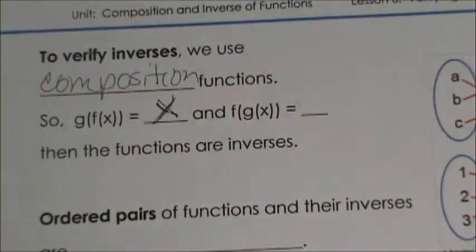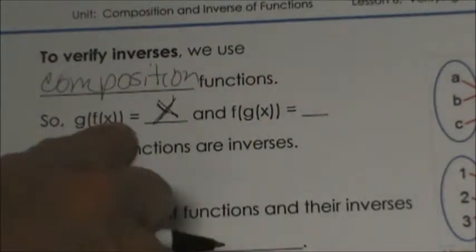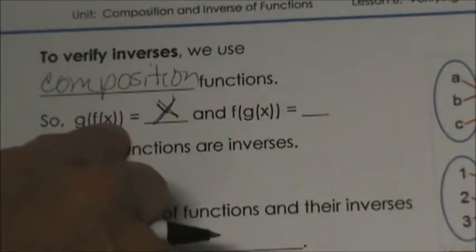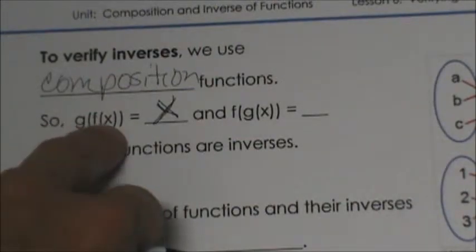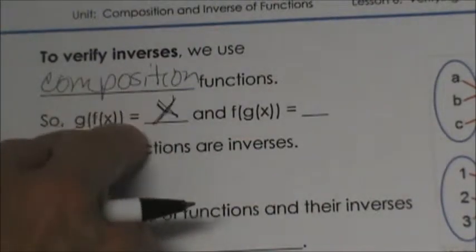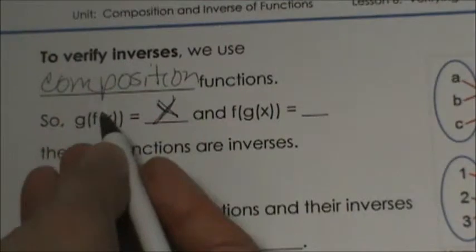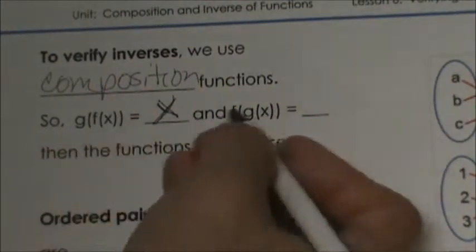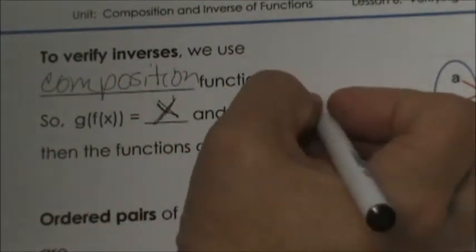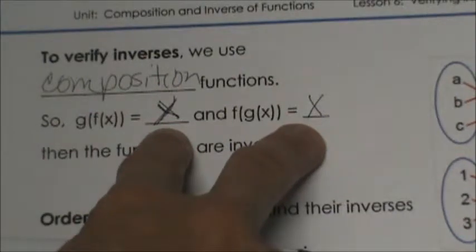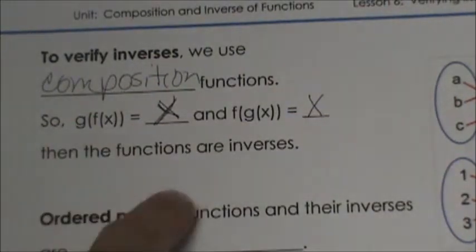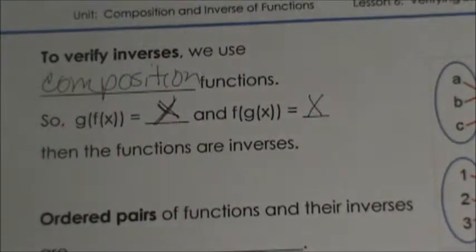You actually have to do it twice. You need to take one function and plug it into the other, then reverse it. So if you have f(x) and g(x), you are going to plug f(x) into g(x) and then g(x) into f(x). Both of them should simplify down just to x. Then we know that they are inverse functions.